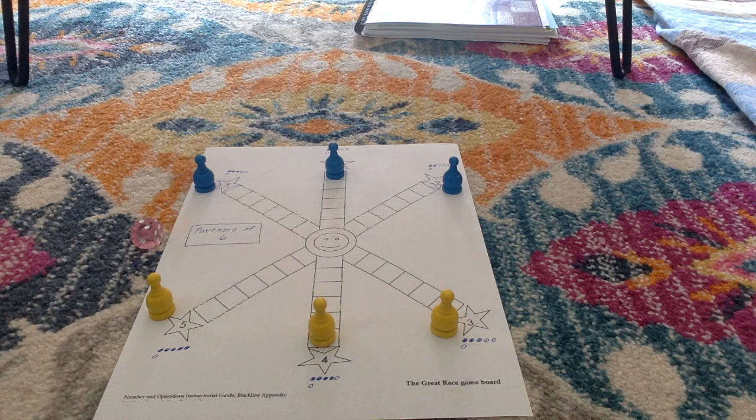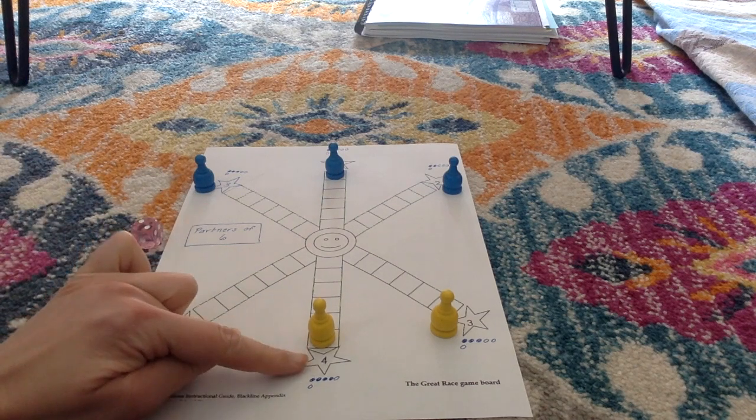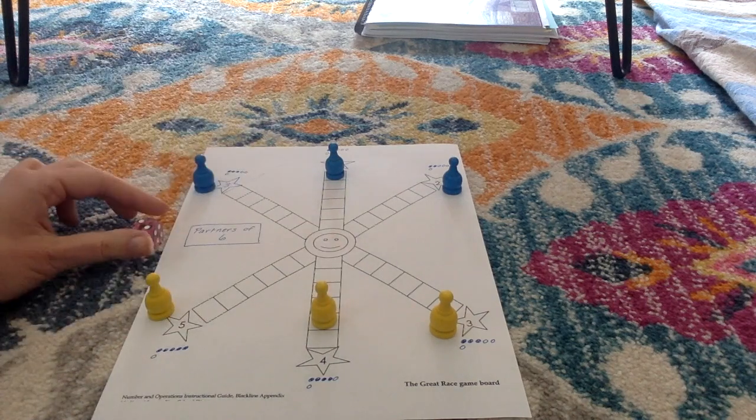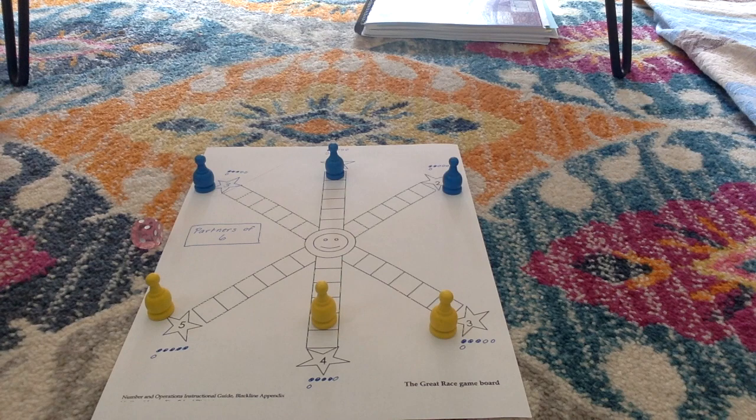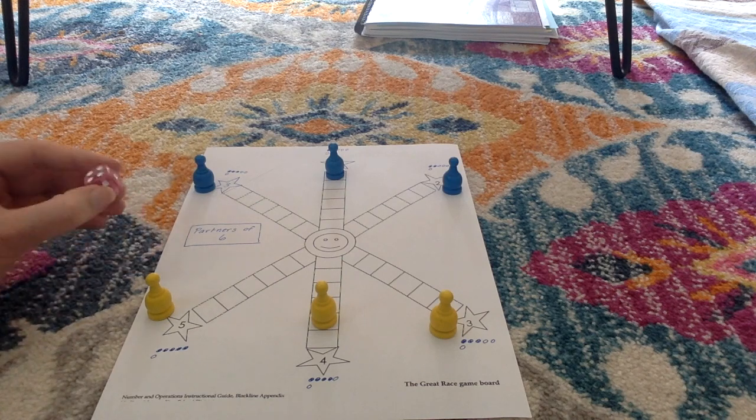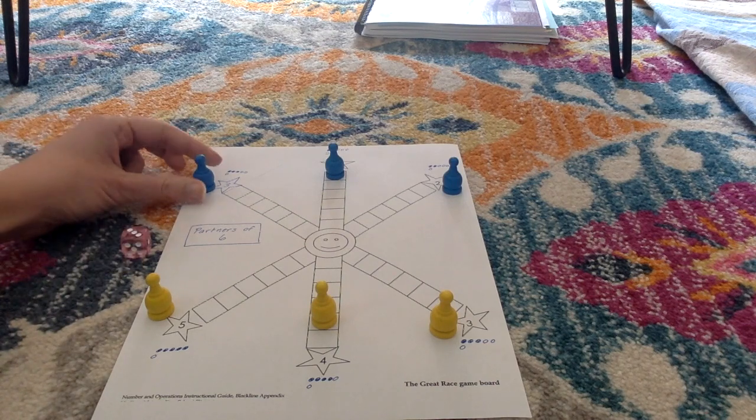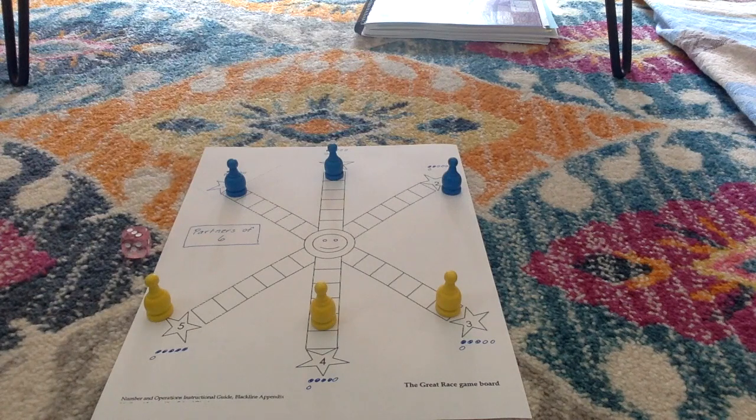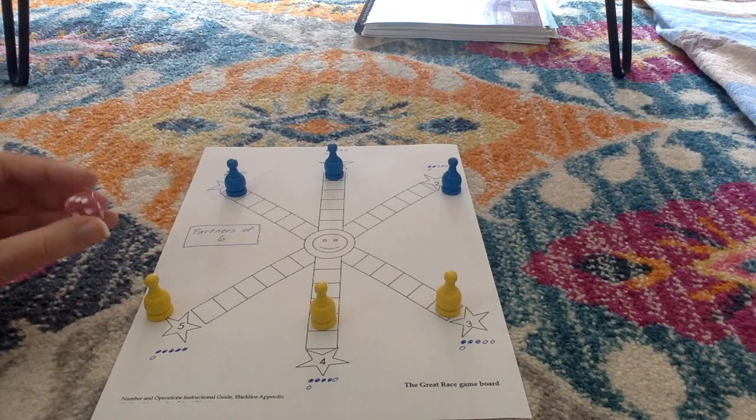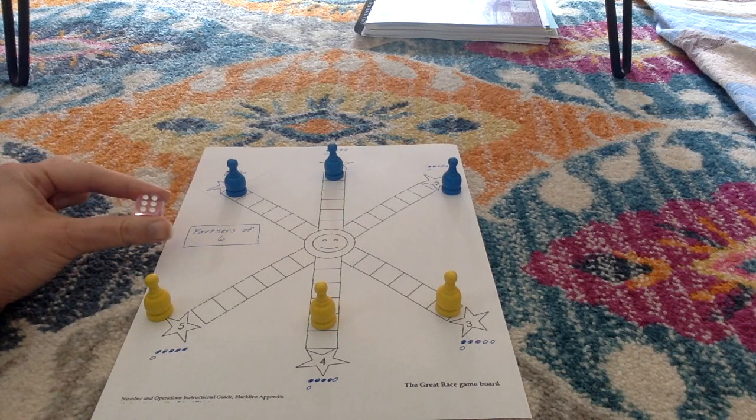Two plus four equals six. So it's this person's chance again. And you keep rolling until someone gets to the middle. If a three is rolled, because it's a doubles fact, both players get to move their pawns. If a six is rolled, no one moves their pawn because zero is not on the game board.